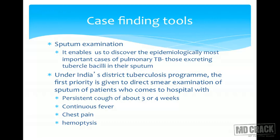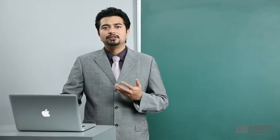Under India's RNTCP program, first priority is given to direct smear examination of sputum for patients who come to the hospital with: persistent cough for about three weeks, continuous fever, chest pain, and haemoptysis. These conditions identify high-risk groups. If a person with these conditions comes to your OPD, they should be referred for sputum examination.